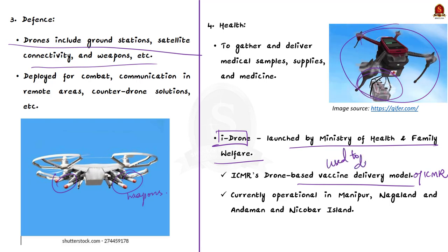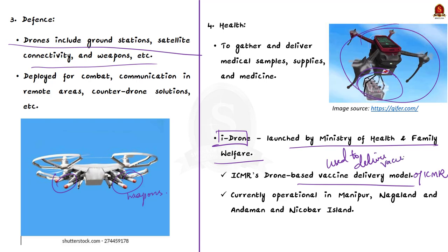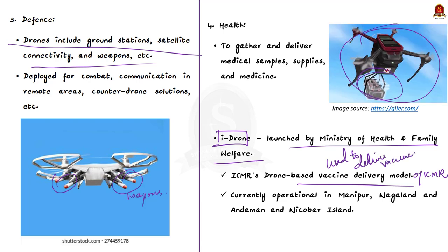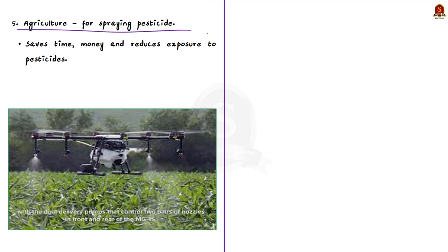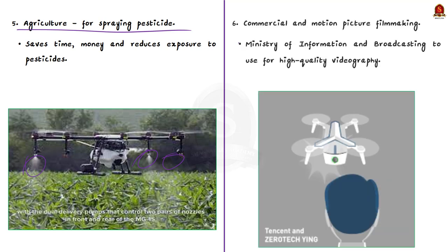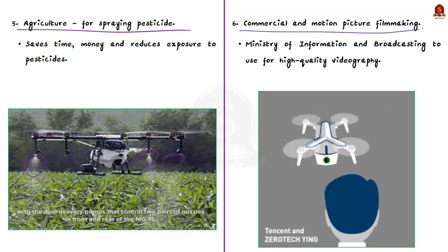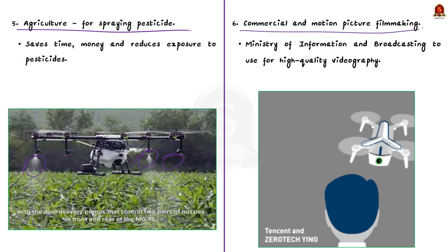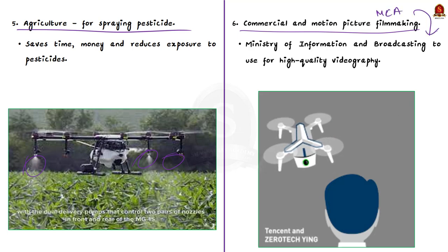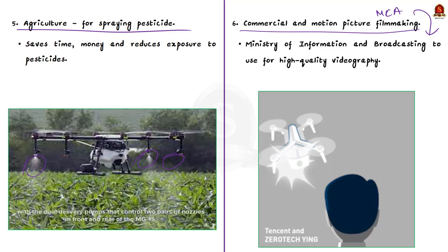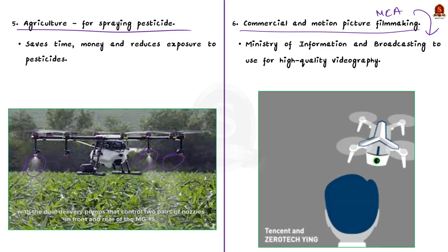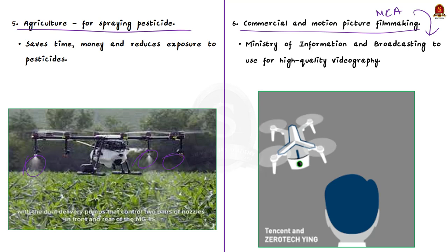Fifth, in agriculture, drones are used by farmers for spraying pesticides, saving money and time while reducing pesticide exposure. They also find use in commercial and motion picture filmmaking. MCA asked the Ministry of Information and Broadcasting to use drones for high-quality videography, which will be cost-effective compared to current helicopter-based videography.